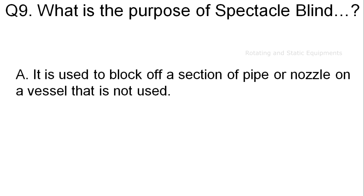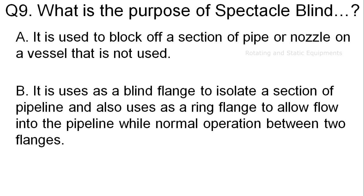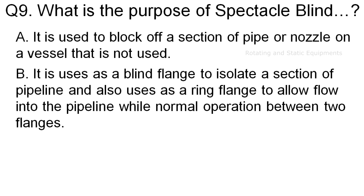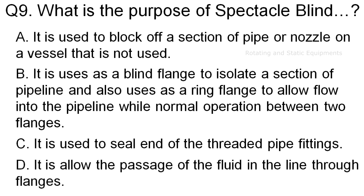Question 9: What is the purpose of a spectacle blind? Option A: it is used to block off a section of pipe or nozzle on a vessel that is not used. Option B: it is used as a blind flange to isolate a section of pipeline, and also used as a ring flange to allow flow into the pipeline during normal operation between two flanges. Option C: it is used to seal the end of threaded pipe fittings. Option D: it allows the passage of fluid in the line through flanges.